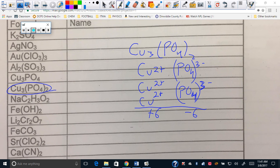So what I'm going to name this, what is my Roman numeral going to be? Two. Roman numeral two. So it's going to be copper Roman numeral two phosphate.